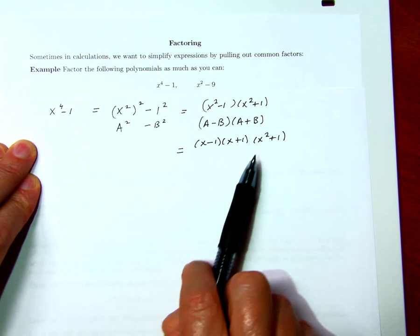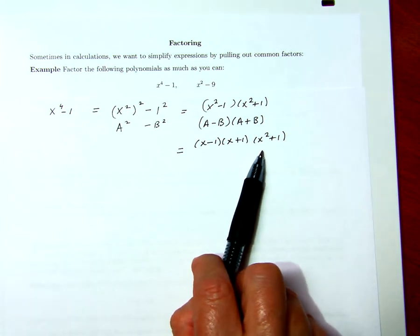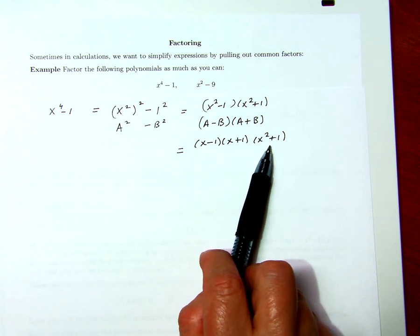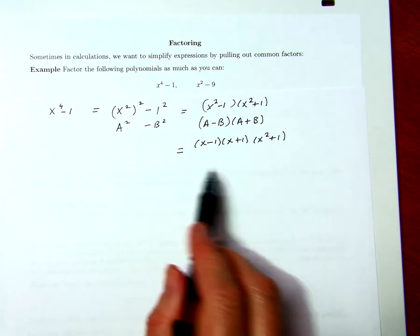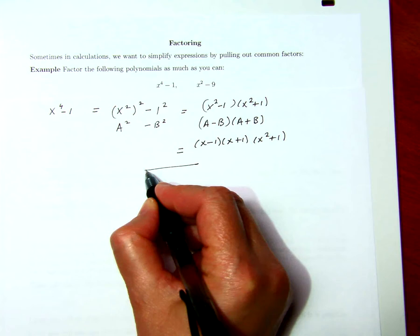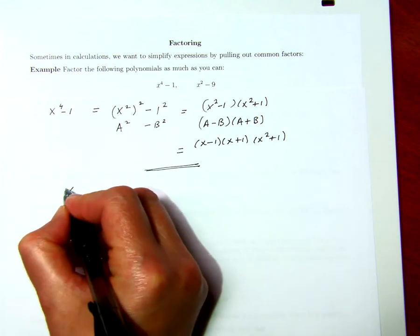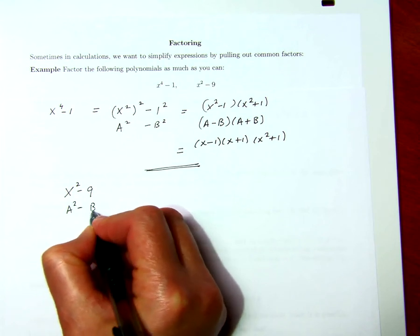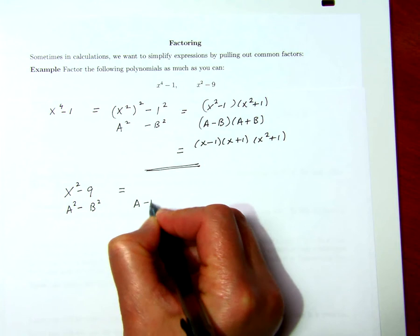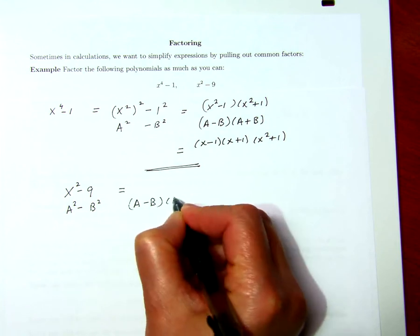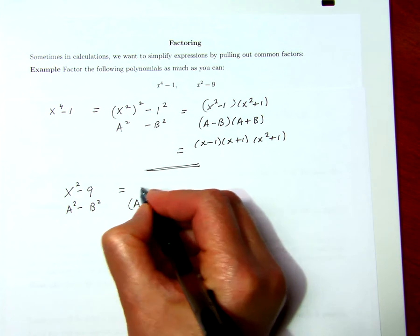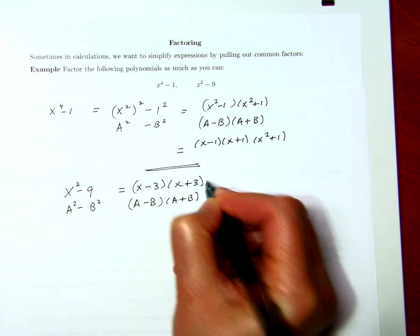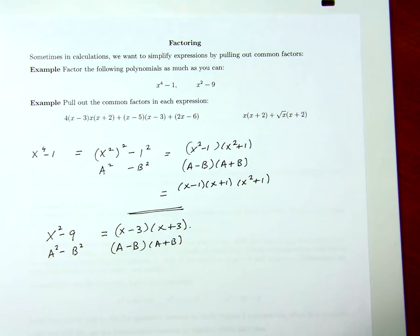We'll see later that if x is any real number, then x squared plus 1 cannot be reduced any further, and that will become obvious later. x squared minus 9 is similar. This is a squared minus b squared, so this should equal a minus b times a plus b, and of course b here is 3, so it's x minus 3 times x plus 3. Those are my factors of those expressions.